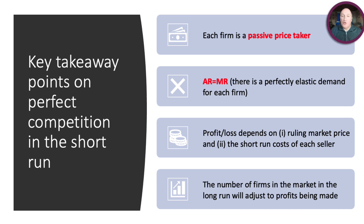Key takeaway points for the short run: each firm is a passive price taker, so there's virtually no price competition in the market — we don't see the price wars you might expect. Each firm faces a perfectly elastic demand curve. Profit and loss depends on the market price set against the short-run costs of the seller, and the number of firms in the market will adjust in the long run depending on the profits being made.